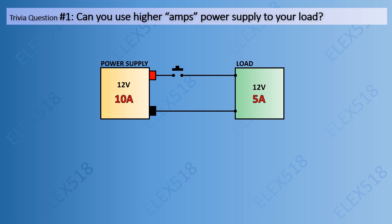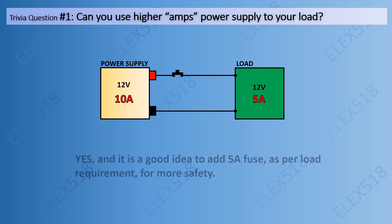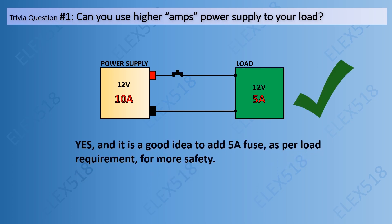Trivia question number one: Can you use a higher amps power supply for your load? For example, you have a 10 amps power supply connected to a 5 amps load requirement. Yes, it will work, and it is a good idea to add a 5 amps fuse as per the load requirement for more safety.